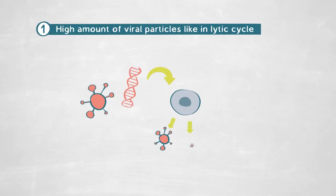What we found is that this viral infection we were characterizing was nothing like any other chronic infection reported to date. First, the virus produced an incredibly high amount of viral particles — meaning the virus is producing a progeny comparable to a lytic infection, but without actually killing the host.